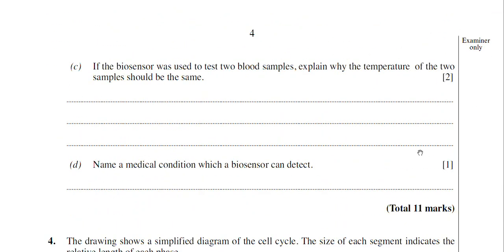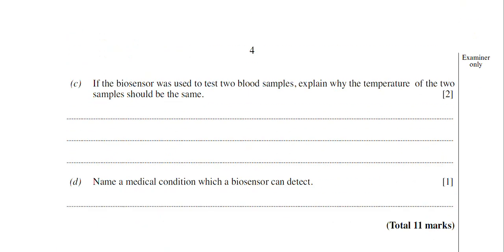Moving on. If the biosensor was used to test two blood samples, explain why the temperature of the two samples should be the same. Now this is a question really that's relating to the practical aspects of using enzymes. Now temperature of course can affect how enzymes work. A higher temperature can actually increase the rate of an enzyme-catalyzed reaction. So it's very much a practical based question. Basically, the temperature has to remain the same because if it isn't, then the rate of the enzyme-catalyzed reaction can be different with the two blood samples. If the rate of reaction is different, it means that you're going to get different amounts of ammonium ions being produced.